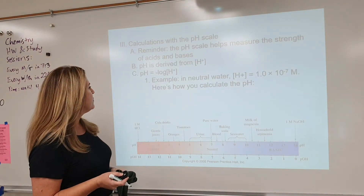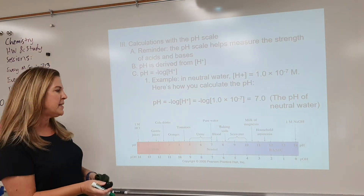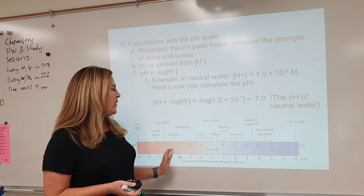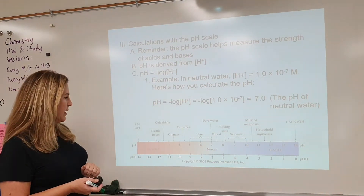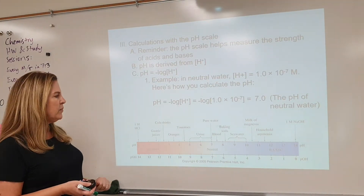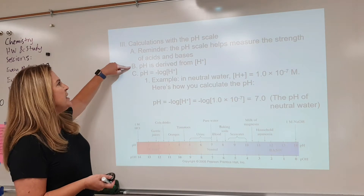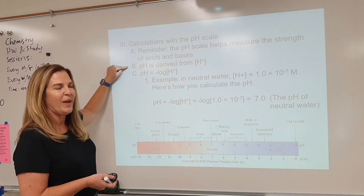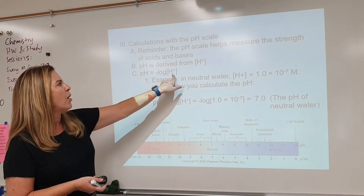Calculations with the pH scale. The pH scale helps us measure the strengths of acids and bases. Remember our 7 — a pH of exactly 7 is neutral. If it's 6.999, that would be acidic; if it's 7.1, that would be basic. As you go from 7 toward 1, the stronger the acid. As you go from 7 the other way, the stronger the base. By definition, pH equals the negative log of the hydrogen ion concentration — it's all about the hydrogen ion concentration.